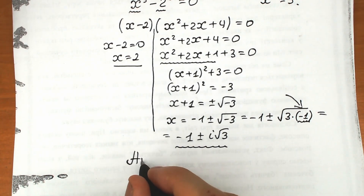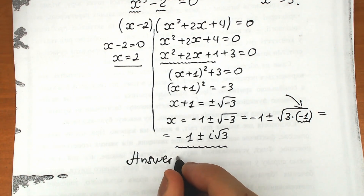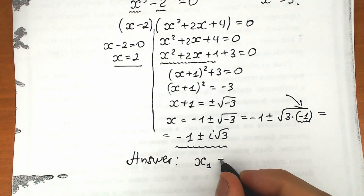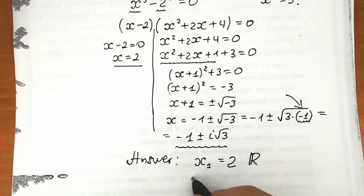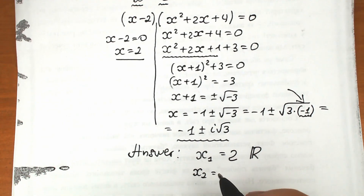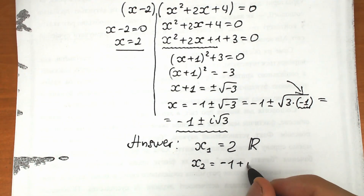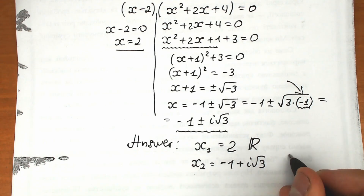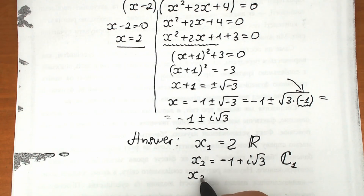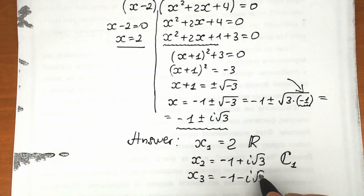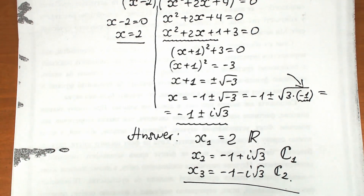So let's write all our roots. x₁ equals 2, which is our real number root. x₂ equals minus 1 plus i square root of 3, which is our first complex root. And x₃ equals minus 1 minus i square root of 3, which is our second complex root. This is the full solution to this challenge — we found all three roots.